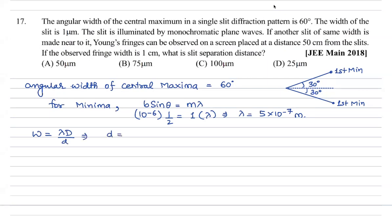We need to find small d. Lambda = 5 into 10⁻⁷, capital D = 0.5, and fringe width = 10⁻². So d = 5 × 10⁻⁷ × 0.5 divided by 10⁻². This value comes out to 2.5 into 10⁻⁵ meter, which is 25 micrometer.